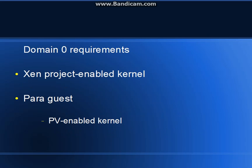There are several requirements for using domain 0. A Xen project enabled kernel is necessary and most Linux operating systems come with Xen project enabled kernels now. Older versions of Linux can become enabled if you need to get an update. Para-virtualized guests must have para-virtualization enabled kernels, and like with Xen project enabled kernels there are updates available for these other guests.